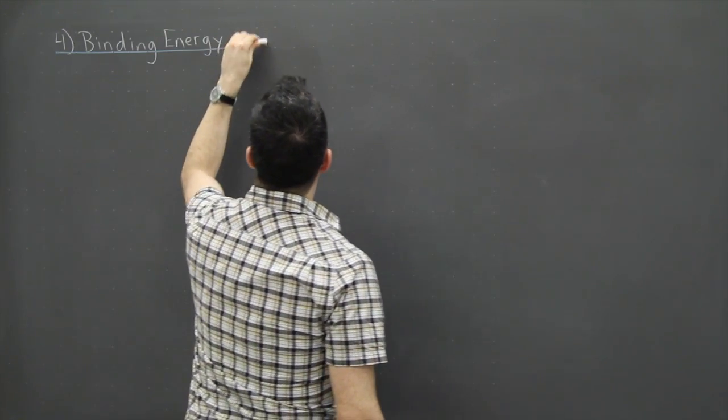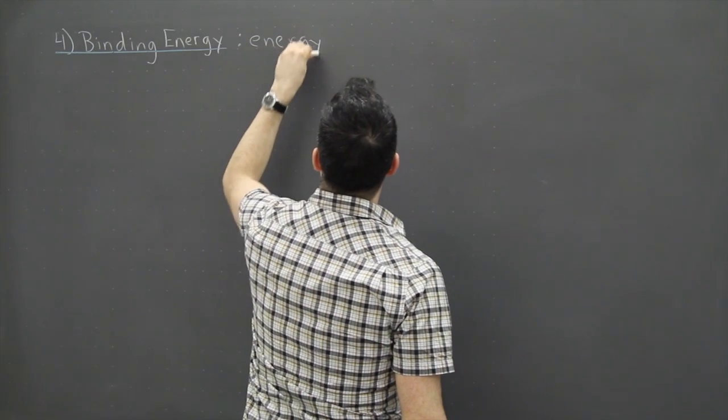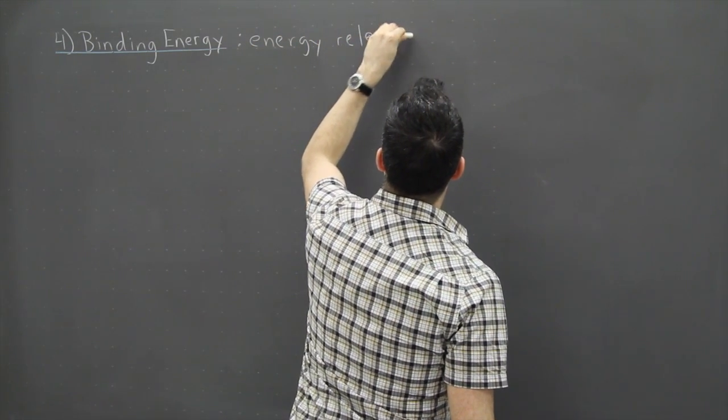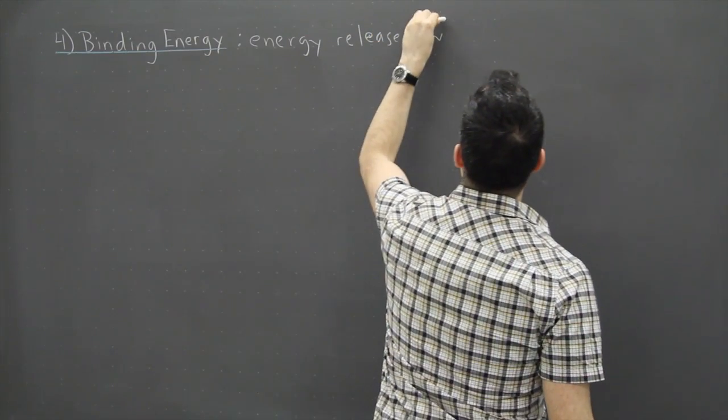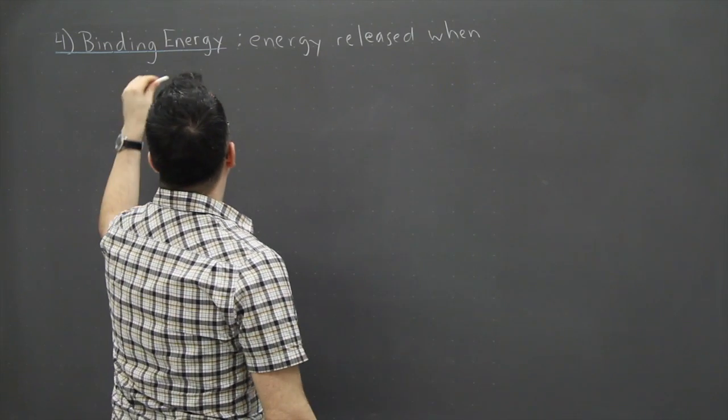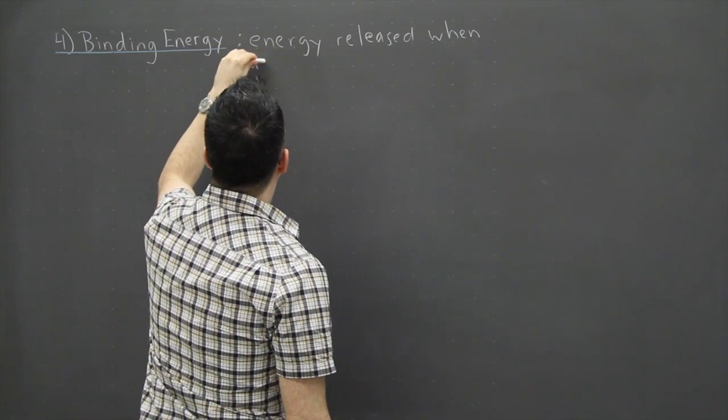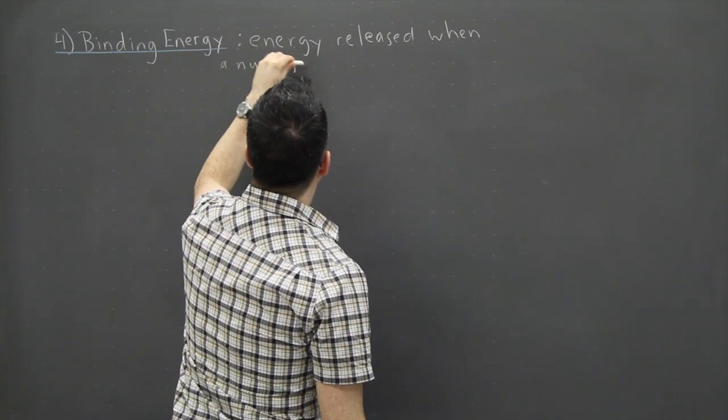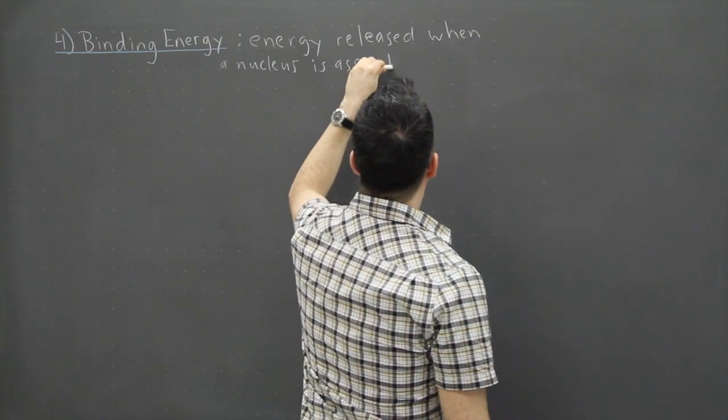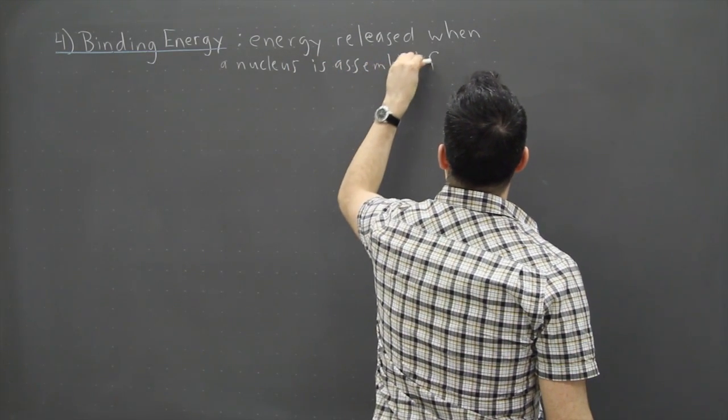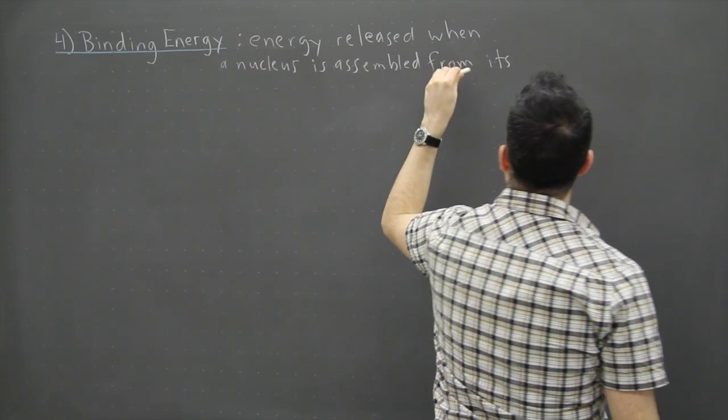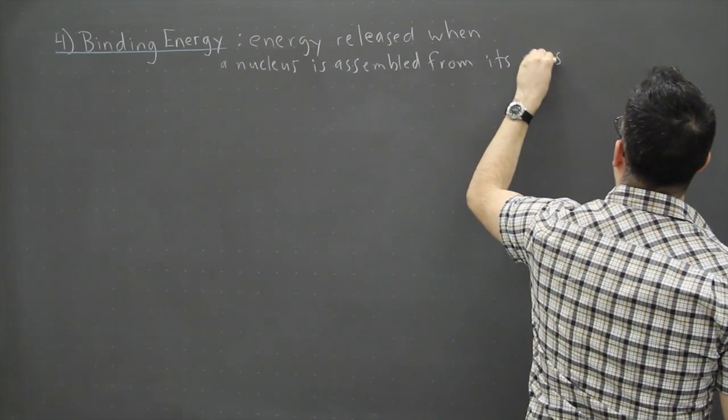So binding energy is the energy that's released when a nucleus is assembled from its constituent parts. That's usually a sort of textbook type definition. I'll explain what that means.